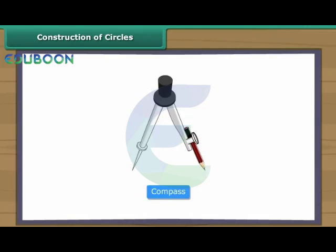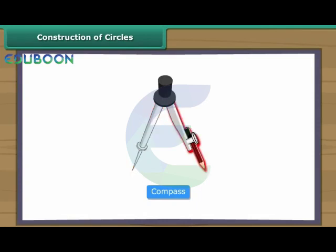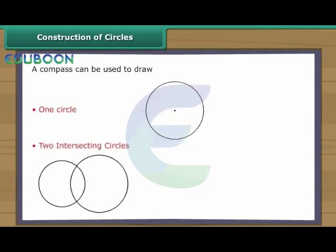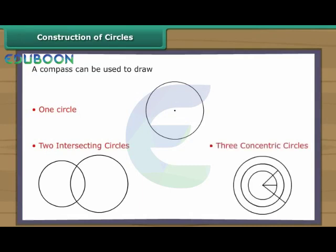A compass is an instrument with two arms. While one arm remains fixed, the other arm with the pencil moves freely. Let us use a compass to draw one circle, two intersecting circles, and three concentric circles.